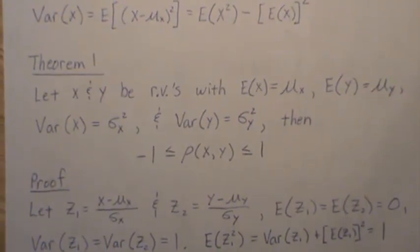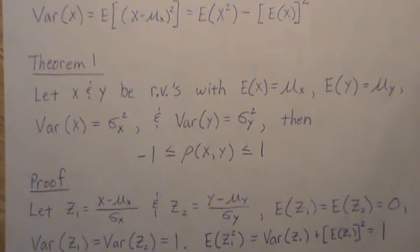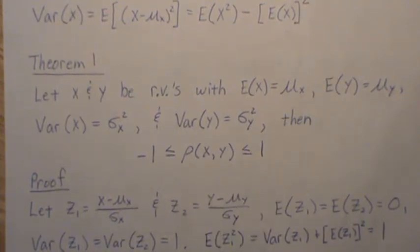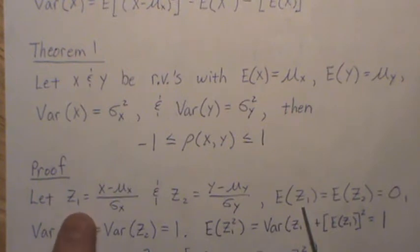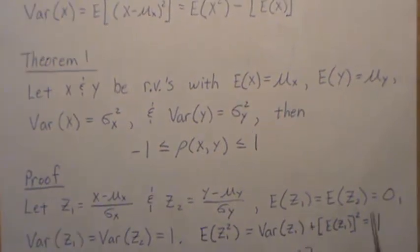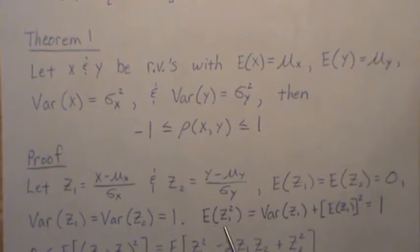To simplify things we're going to create two variables z1 and z2. z1 is the z-score of x — it's x minus the mean divided by the standard deviation — and z2 is y minus its mean divided by its standard deviation. You can show that the expected values of z1 and z2 are equal to 0, the variances of z1 and z2 are 1, and if you look at the expected value of z1 squared, we're examining that now.